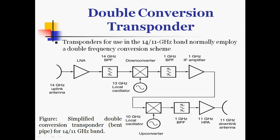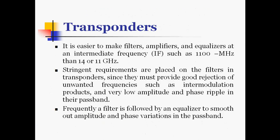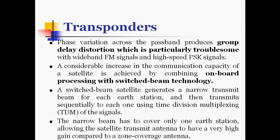The single conversion is a bent pipe transponder and the double conversion is also a bent pipe transponder working at the 14 to 11 GHz band. It is easier to make filters, amplifiers, and equalizers at an intermediate frequency such as 100 MHz than at 14 or 11 GHz. Stringent requirements are placed on satellite filters in transponders since they must provide good rejection of unwanted frequencies such as intermodulation products and very low amplitude and phase ripple in their passband. Phase variation across the passband produces group delay distortion, which is particularly troublesome with wideband FM signals and high speed PSK signals.